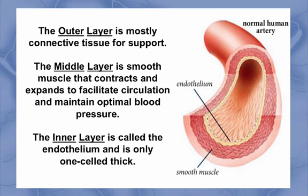As you can see by the slide, arteries are made up of three layers. The outer layer is mostly connective tissue to provide support to the inner two layers. The middle layer is smooth muscle. This smooth muscle contracts and expands to facilitate circulation and maintain optimal blood pressure. The inner layer is called the endothelium. It's only one cell thick, and it protects the integrity of the entire cardiovascular system through a wide range of biochemical actions, one of which is the production of a gas called nitric oxide.